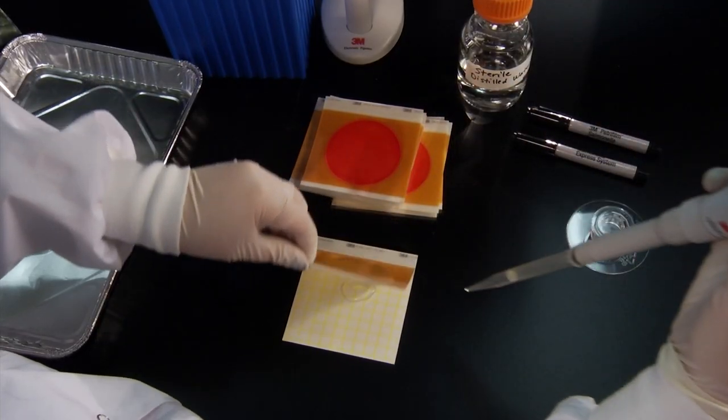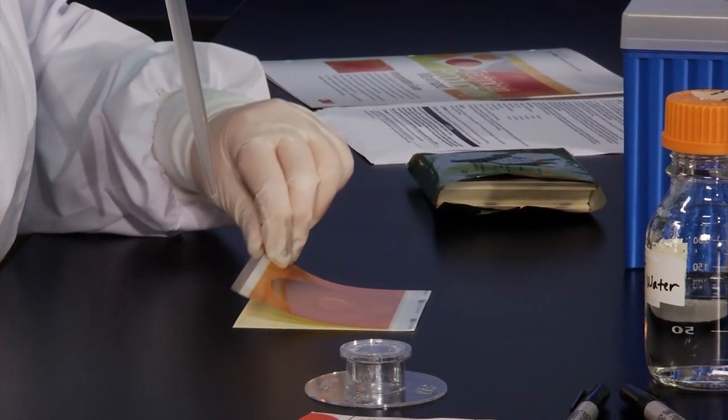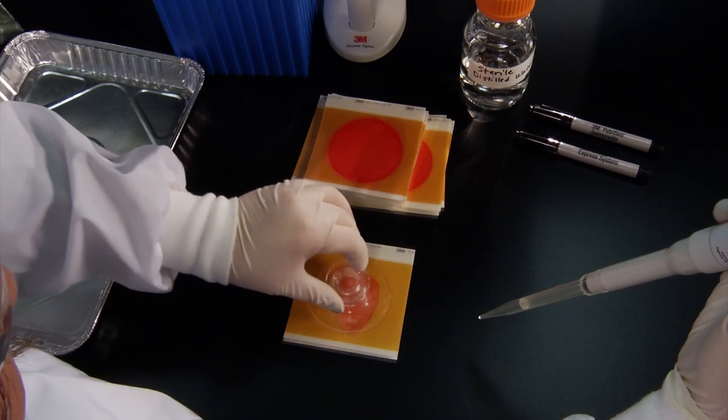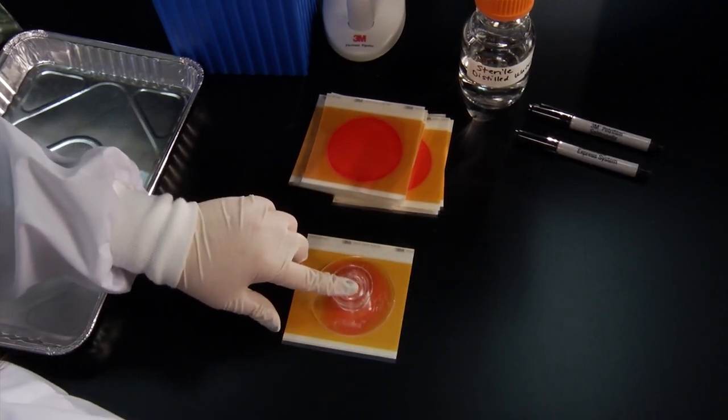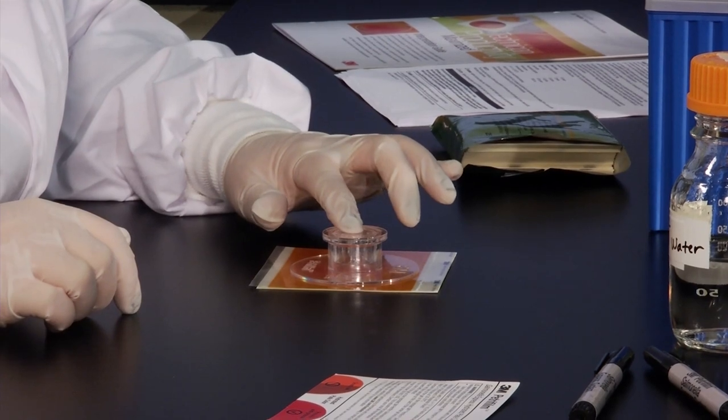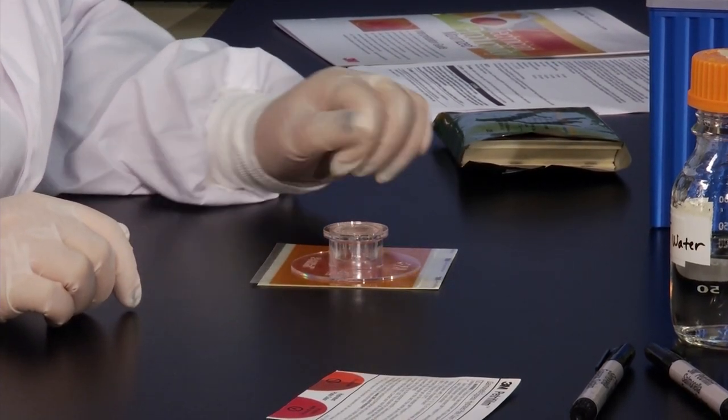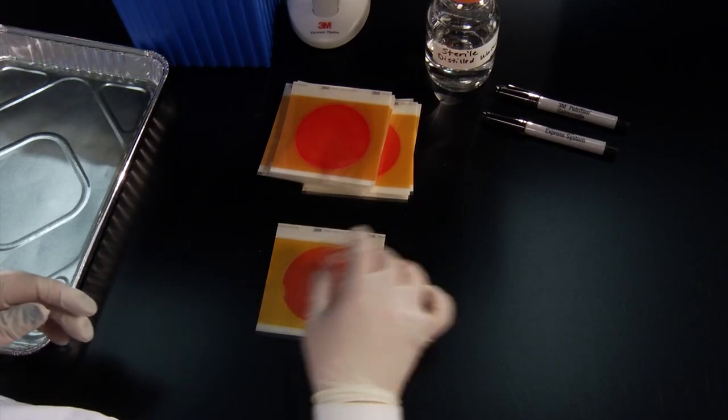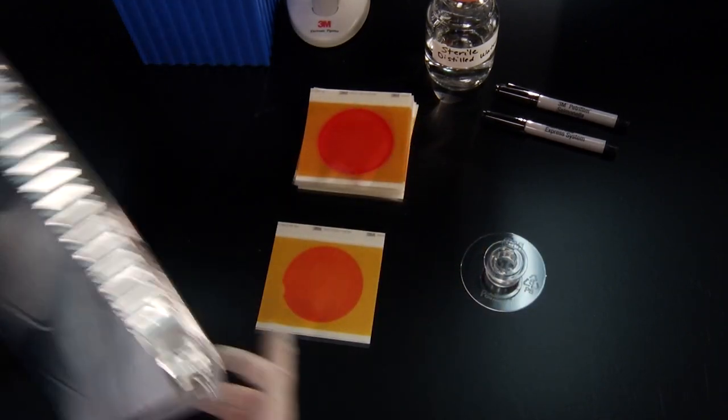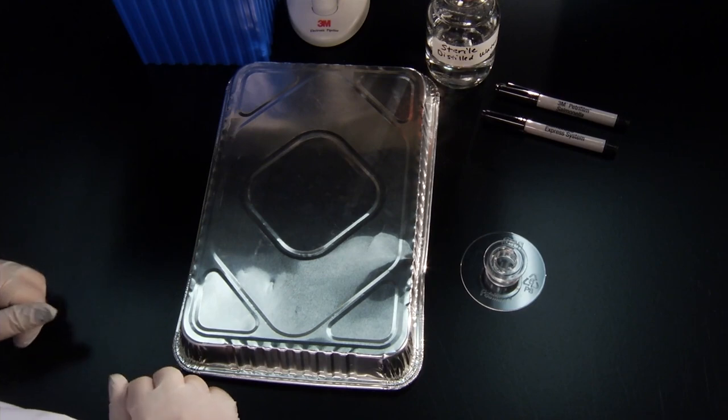Gently roll down the top film onto the diluent to prevent trapping air bubbles and place the 3M PetriFilm flat spreader on the center of the plate. Press gently on the center of the spreader to distribute the diluent evenly. Remove the spreader and leave the 3M PetriFilm Salmonella Express Plate undisturbed for at least 1 minute.